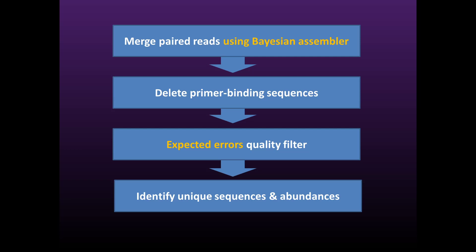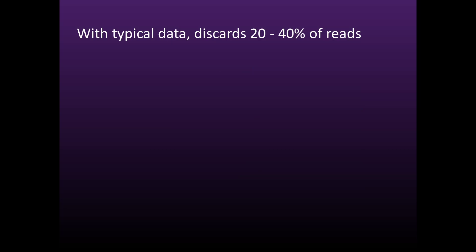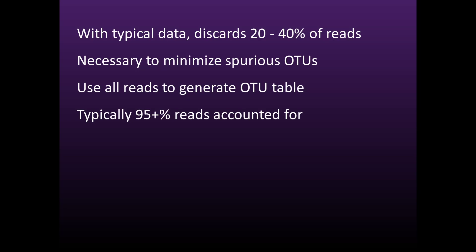With typical 16S data, these processing steps discard 20 to 40 percent of the reads, but this is necessary to keep the number of spurious OTUs to a reasonable level. Note that once the OTUs have been identified, the unfiltered reads can be used to generate the OTU table, because reads with unacceptable numbers of errors will fail to match an OTU and will therefore do no harm. With this approach, 95 percent or more of the unfiltered reads are typically accounted for in the final OTU table.